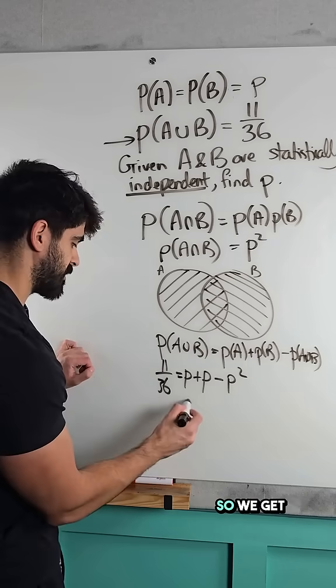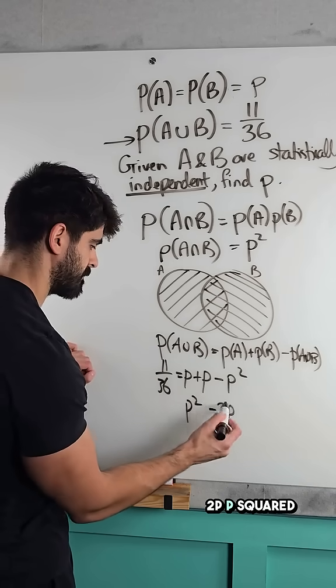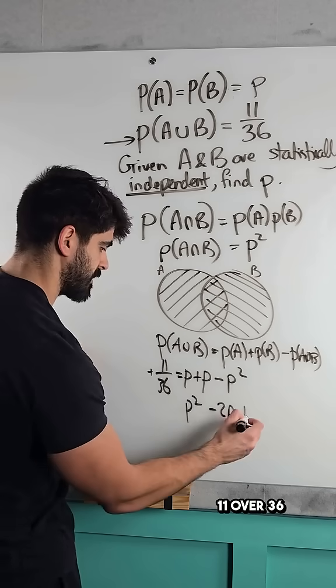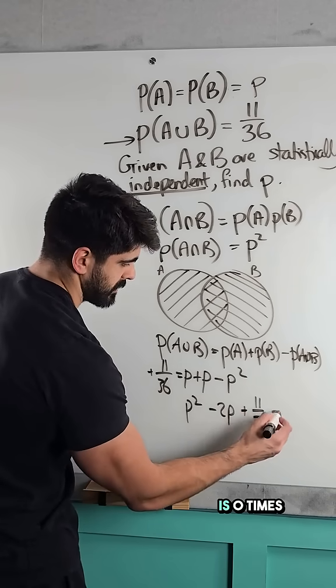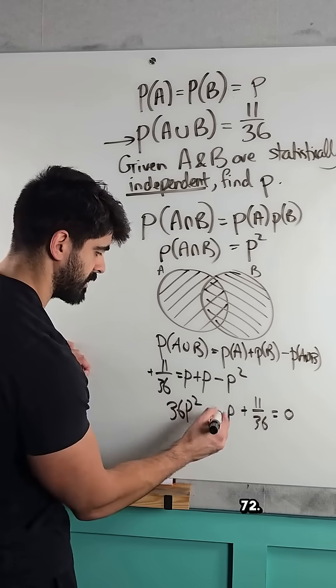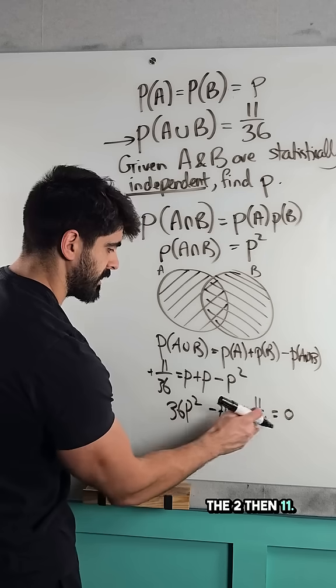Move all that to the other side, so we get P squared minus 2P plus 11 over 36 is 0. Times by 36 so that'll be 72. Could have left the 2. Then 11.